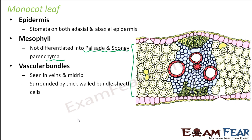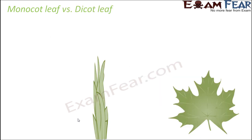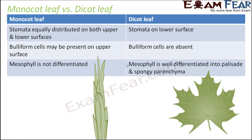The structure of the monocot leaf is a lot simpler than that of the dicot leaf. Let us have a quick comparison between the monocot leaf and the dicot leaf based on whatever we have studied so far.